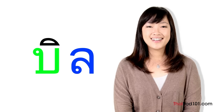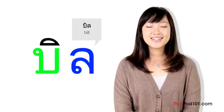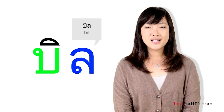The next letter is Lo-ling — ling is a monkey. The sound of Lo-ling as an initial consonant is L like the L in 'little.' When it's the final consonant, Lo-ling also makes an N sound just like Ro-rua did. This consonant actually looks like a monkey, so when you write Lo-ling think of a little monkey with a curved tail sticking up. To write it: start with the head, a small curve to the right, and a larger curve to the left. Take a look at a word written using Lo-ling — it's the English loan word 'bill,' but in Thai we read it as bin. Thai doesn't naturally have the L sound at the end of a syllable, so it changes to sound like the letter N.